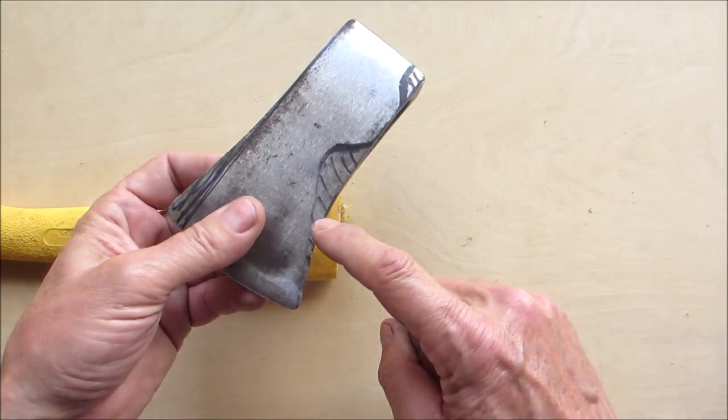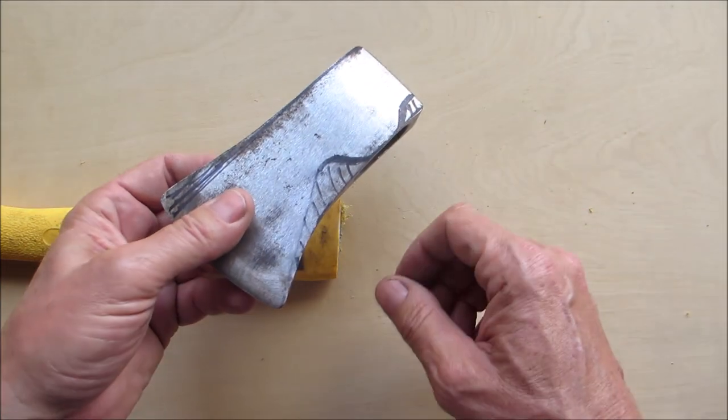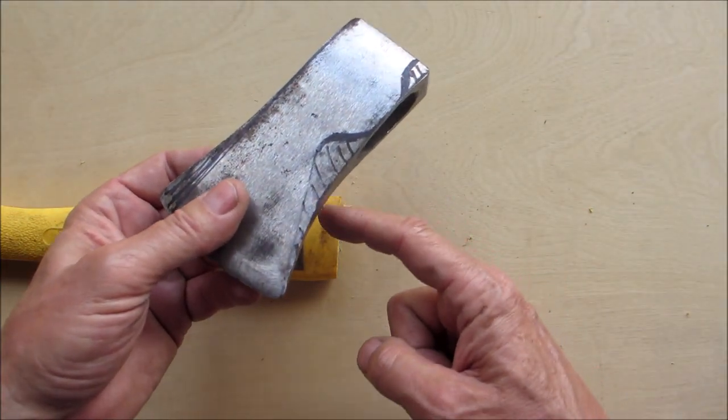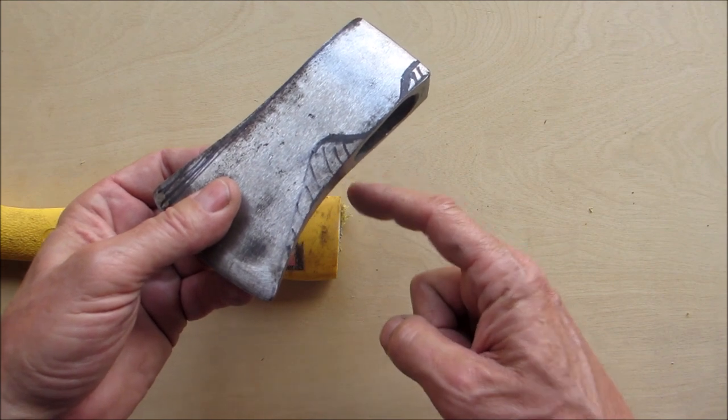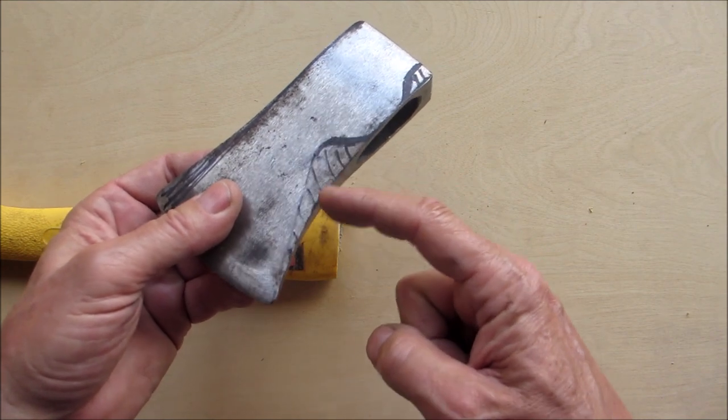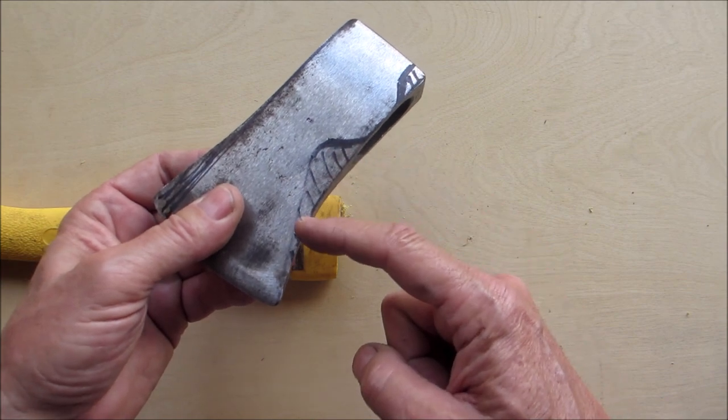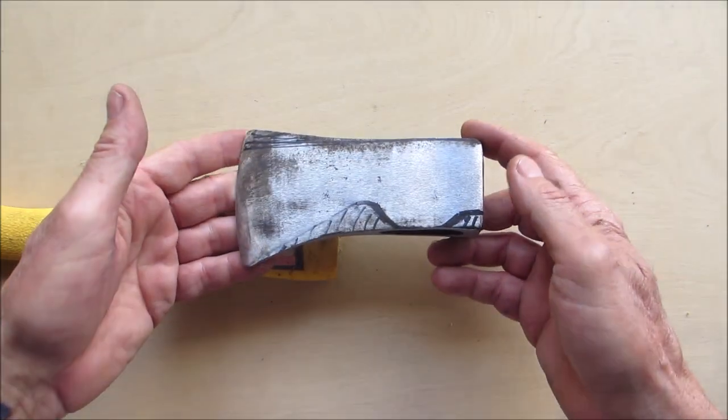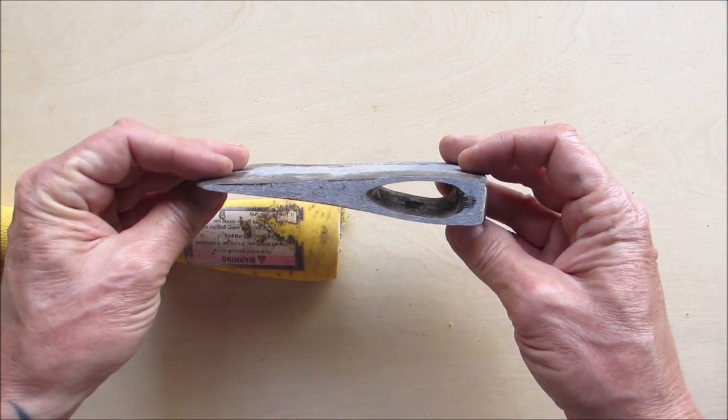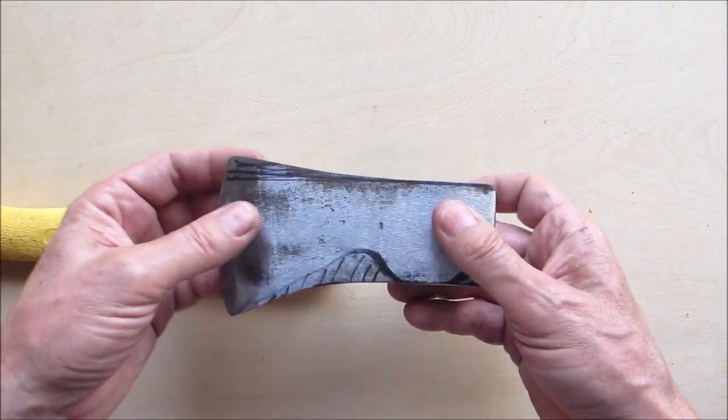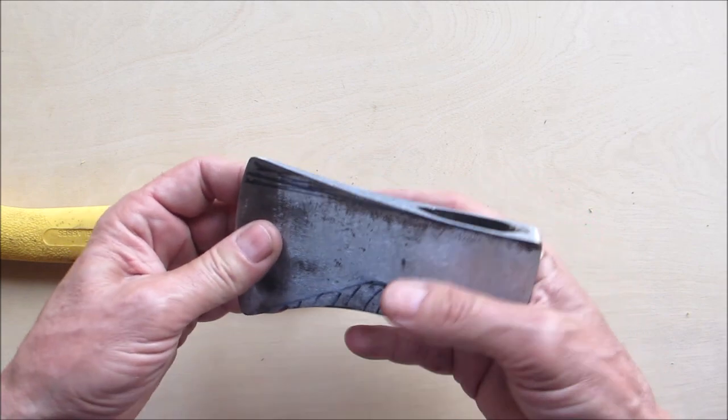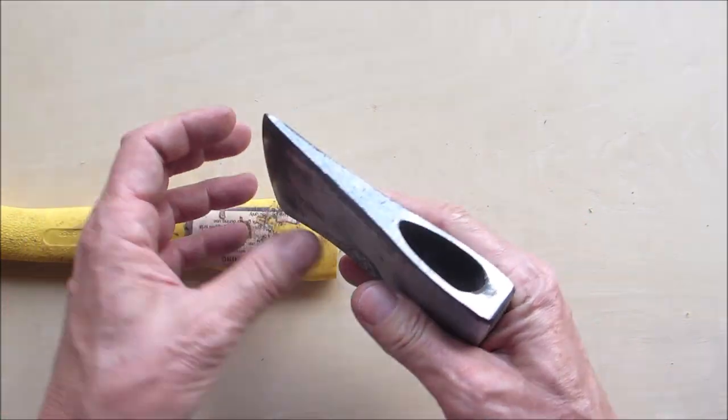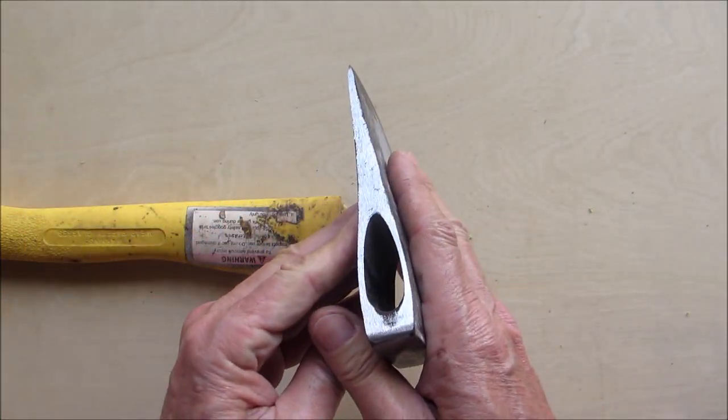So I think what I'm going to do first is take my four-inch angle grinder and make a series of cuts up to the line and then take that off. This is a pound and a quarter head and I'd like to get it down to at least a pound, maybe even a little less.